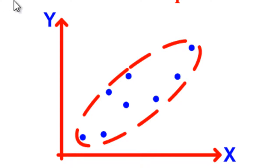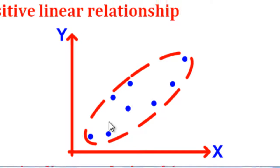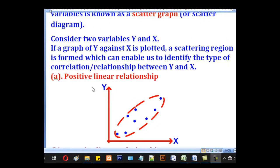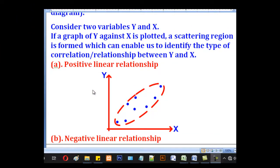There is a positive linear relationship. In this positive linear relationship, the scatter points form a scattering region whereby if you are to draw a line of best fit through those points, it will have a positive gradient. So in that case, there is a positive linear relationship.